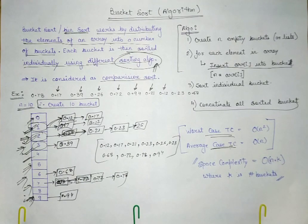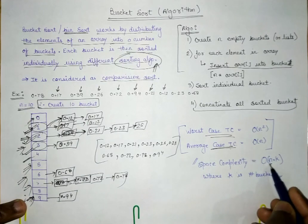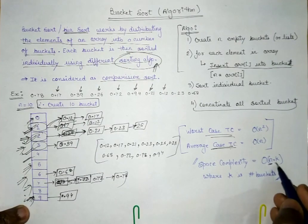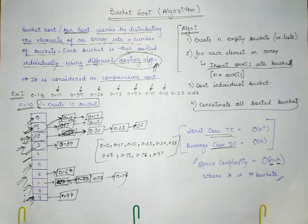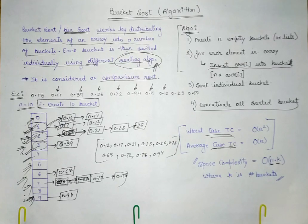The space complexity is O(n × k), where n is the number of elements and k is the number of buckets. This is because we have to allocate k buckets and place the n elements of the array into them, resulting in a space complexity of O(n × k).